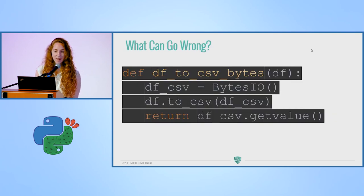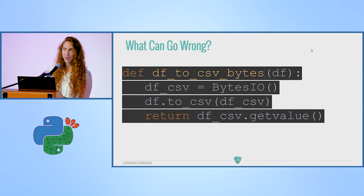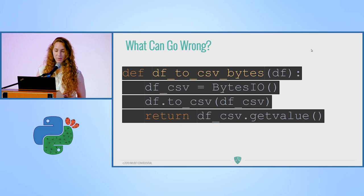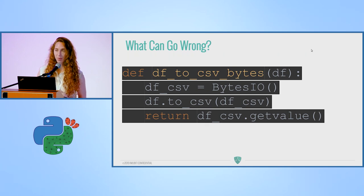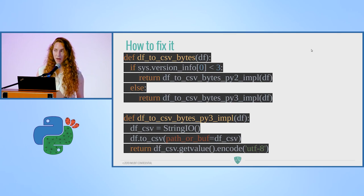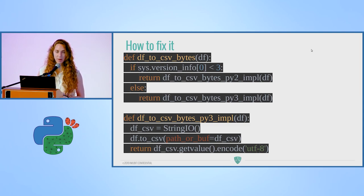For the last example: data frame to CSV in Python 2 expects BytesIO, but in Python 3 it expects StringIO. The solution was to have two functions for the different implementations, and at runtime, choose which one to run based on the running environment.